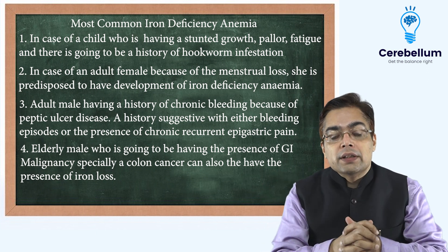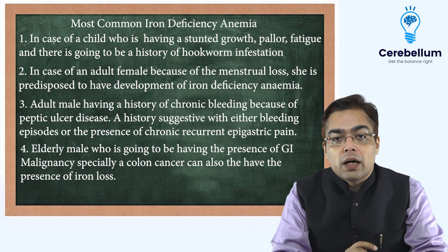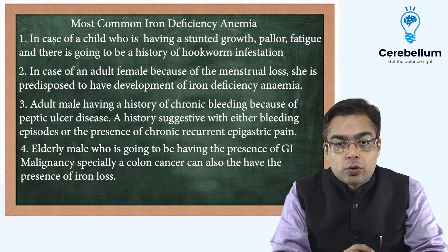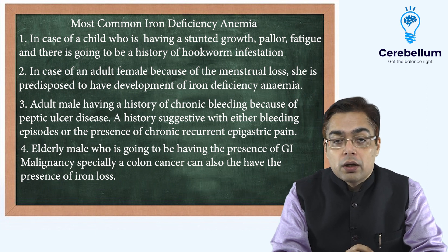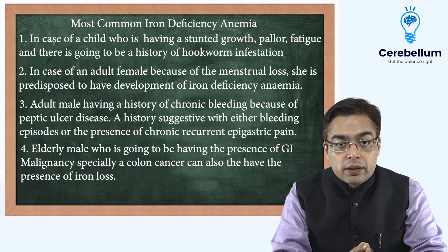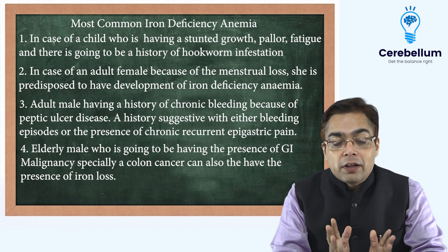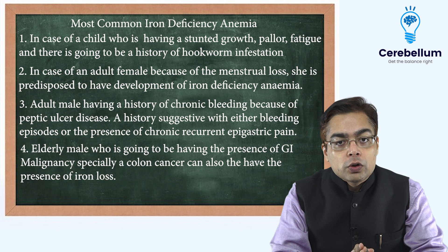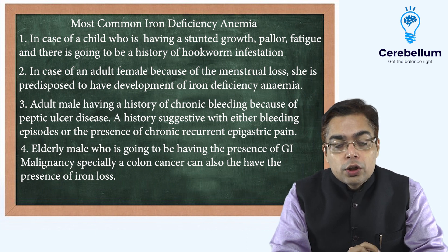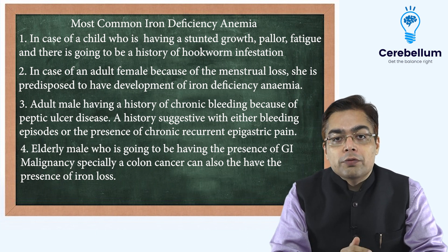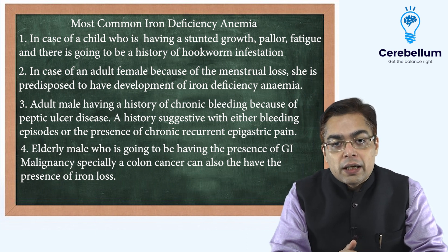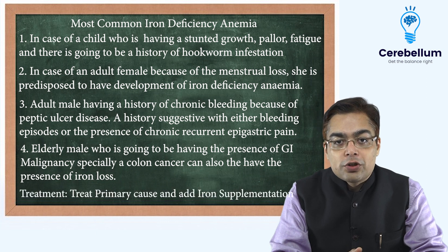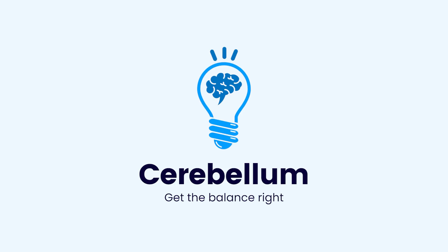So all these four pointers in the history are going to be associated with iron deficiency anemia. Now how do I treat it? Definitely I have to focus on treatment of the primary cause, and then to take care of the microcytic hypochromic anemia, iron supplementation has to be given. Hope this helps. Thank you.